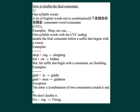Examples of doubling: shop + ING = H-O-P-P-I-N-G, shopping. But for suffixes that begin with a consonant, no doubling. Examples: glad + LY = G-L-A-D-L-Y, gladly. Glad + NESS = G-L-A-D-N-E-S-S, gladness.